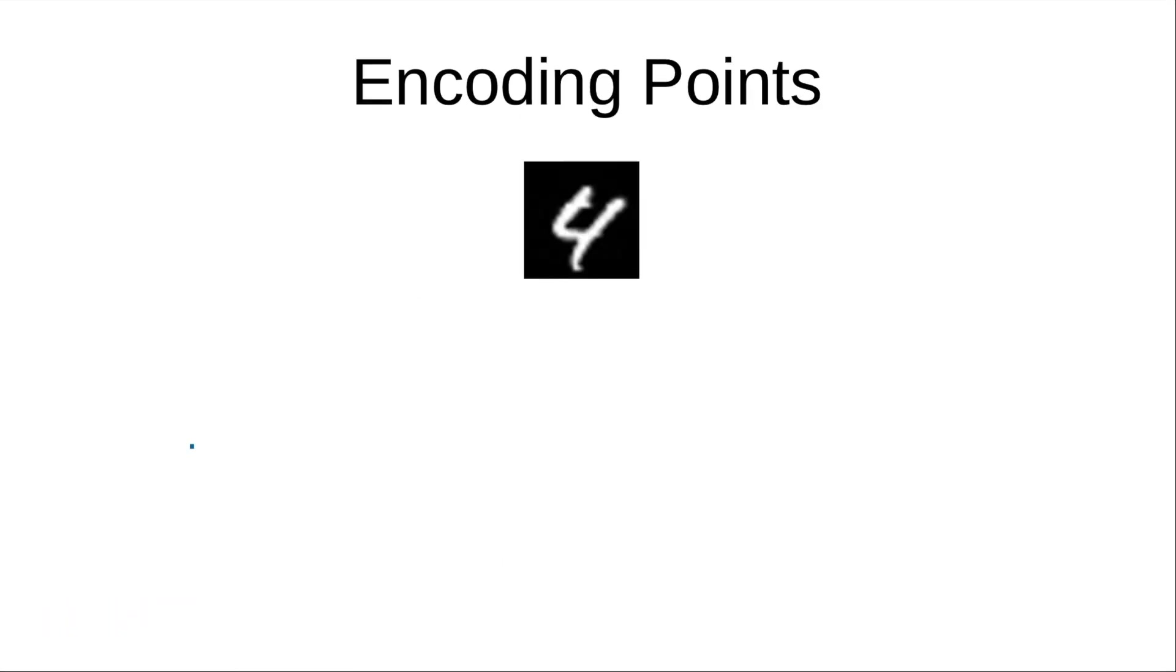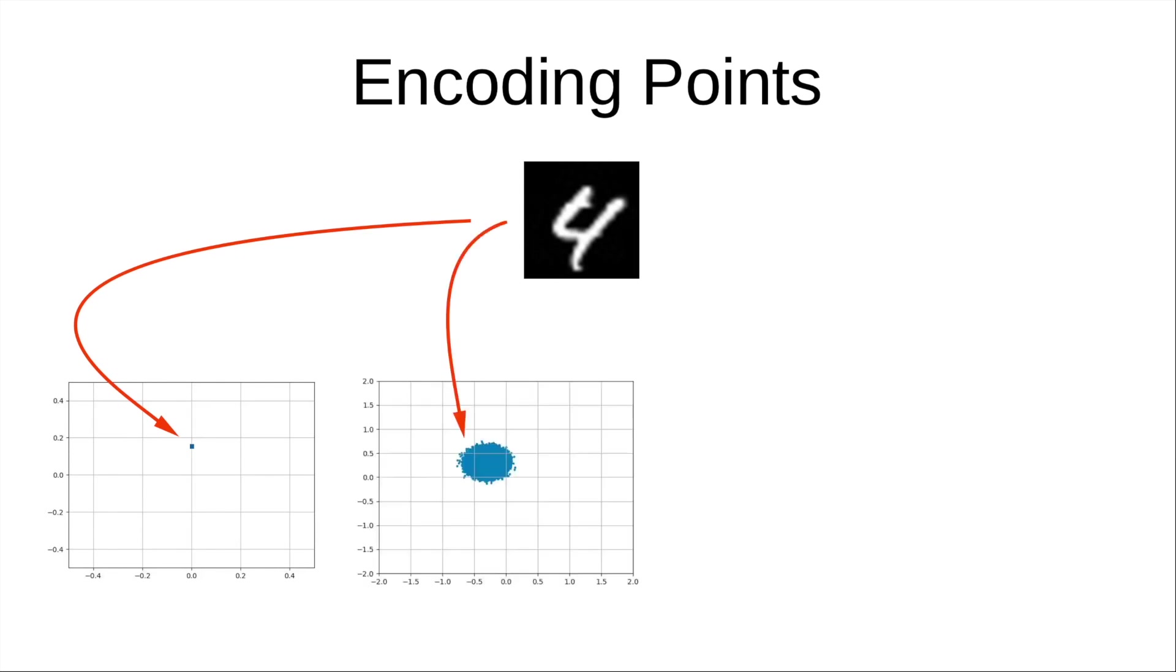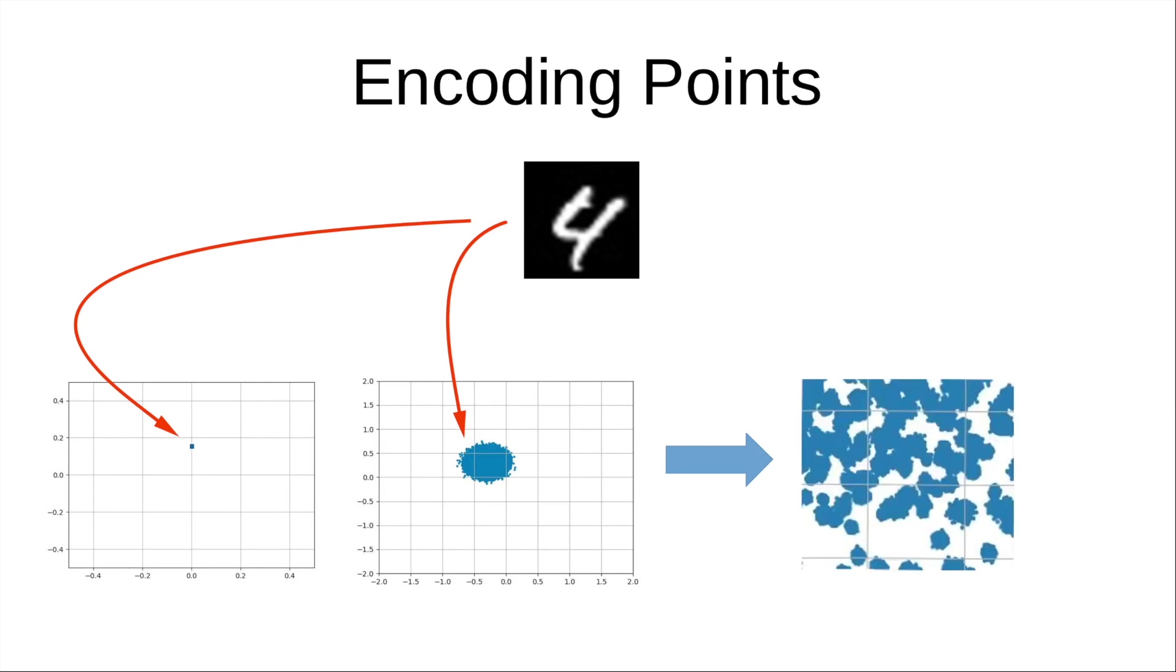Let's first try to tackle the inability of autoencoder to generate valid images from any latent point. Up till now, we were encoding images to a point in latent space. What if, instead, we encode each image as a distribution of points in the latent space? The hope being that if the distribution of each point is large enough, the encoding process of all training images would allow us to capture the entire latent region.